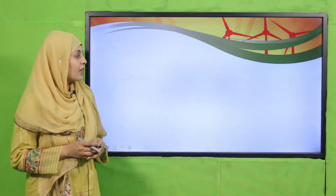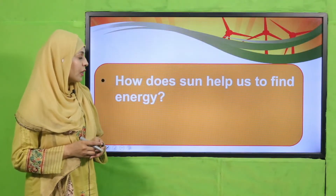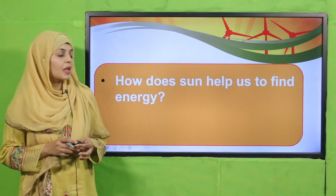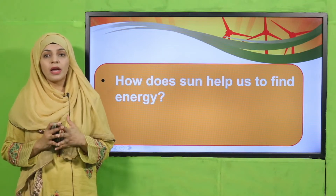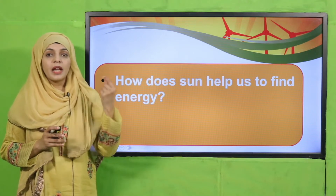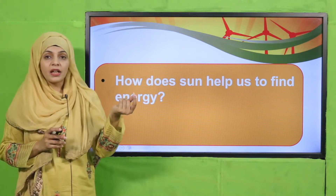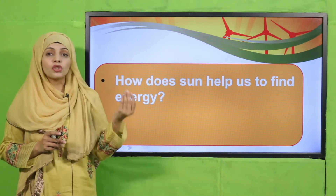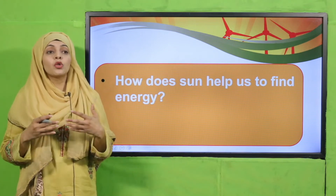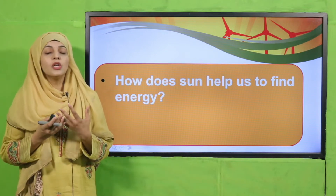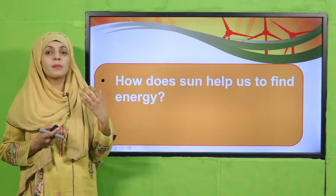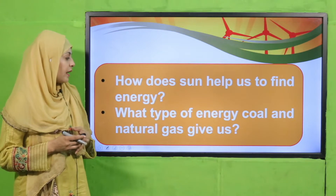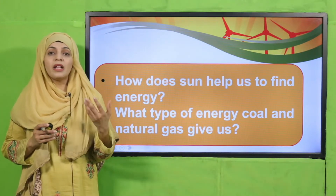Pre-reading question: How does the sun help us find energy? The sun helps us generate electrical energy. Plants prepare their food in its presence. It gives us light and warmth, and helps plants grow. What type of energy do coal and natural gas give us? They provide heat energy and electrical energy, and oil and natural gas also help us cook food.